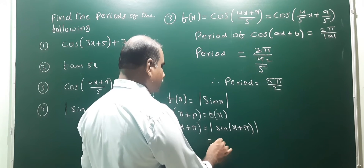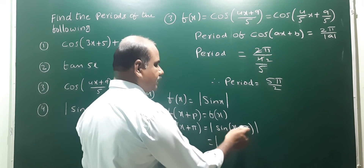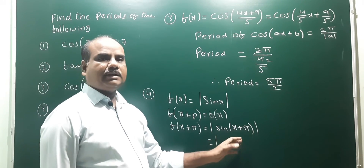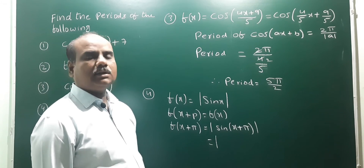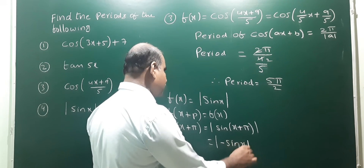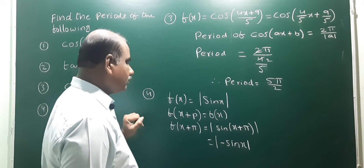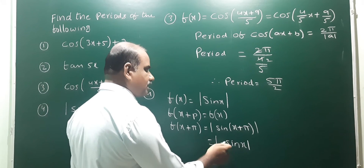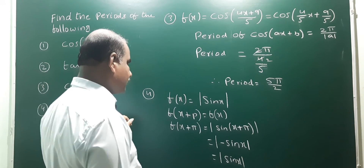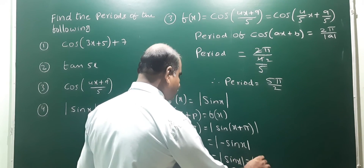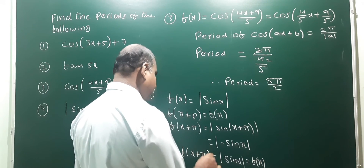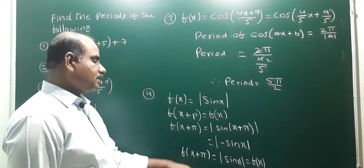That equals modulus of sin(180° + x). In the third quadrant, sin is negative, so sin(180° + x) = -sin(x). Therefore modulus of (-sin x) equals modulus of sin(x), which is f(x). So f(x + π) = f(x), meaning the period is π.